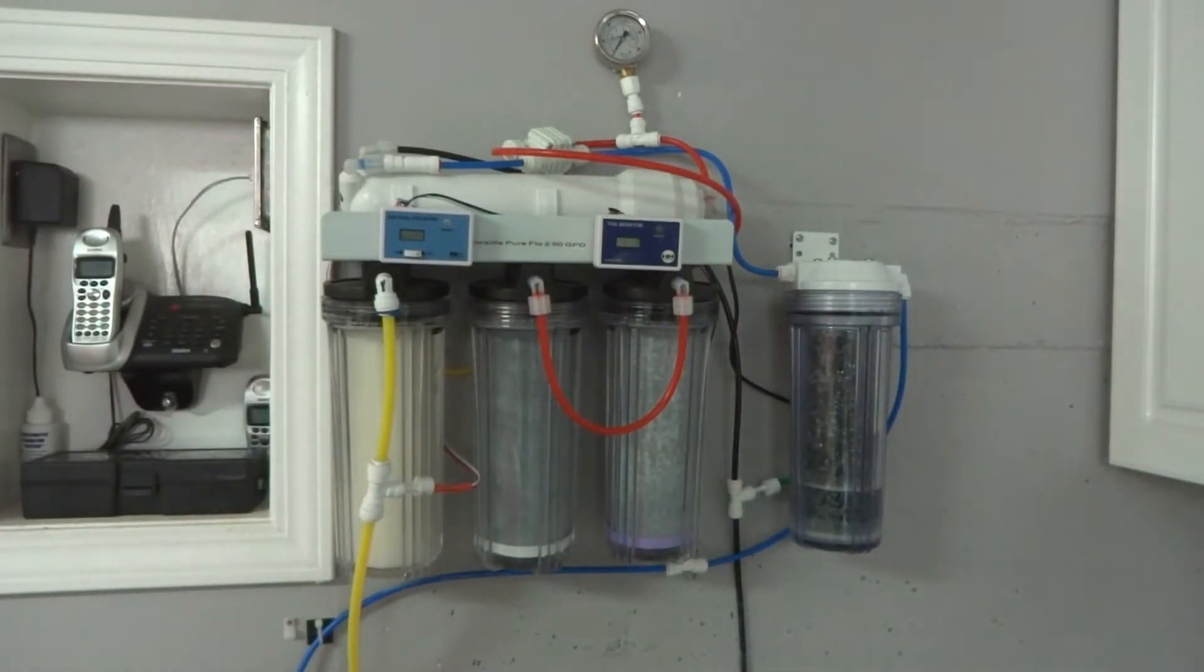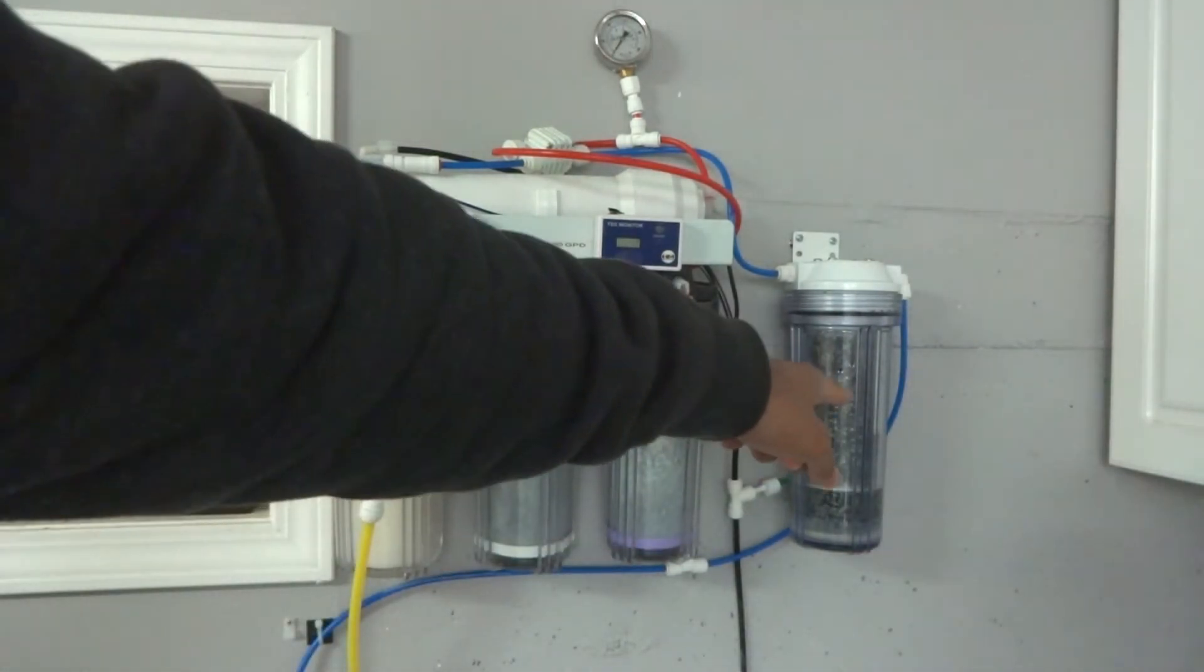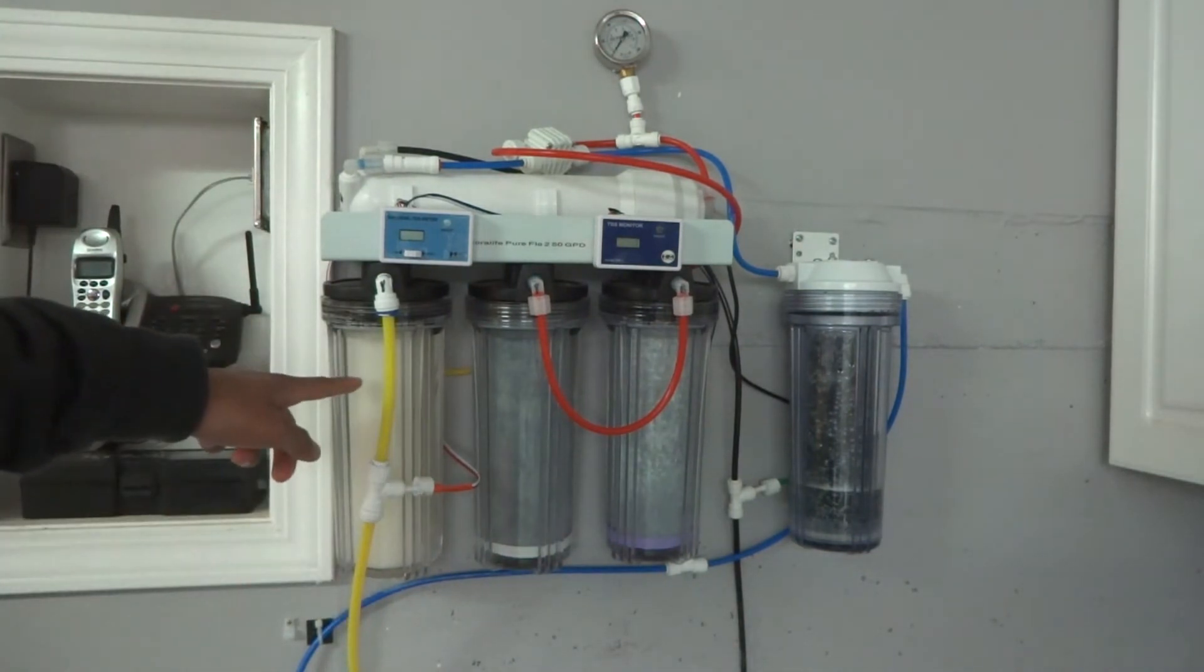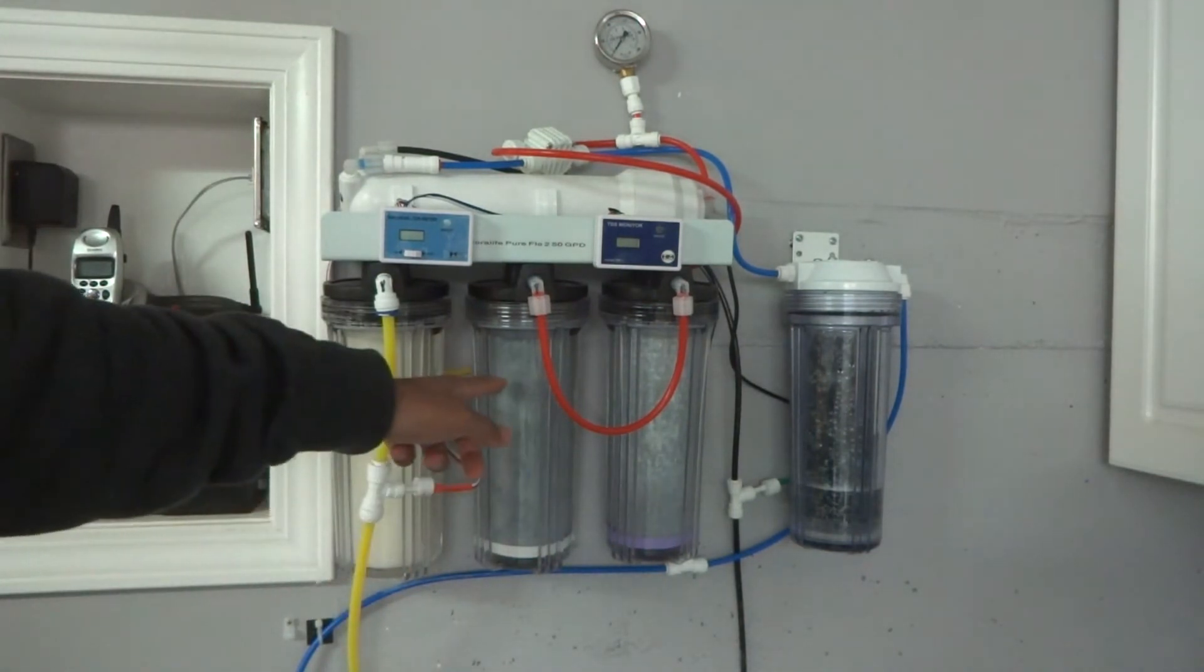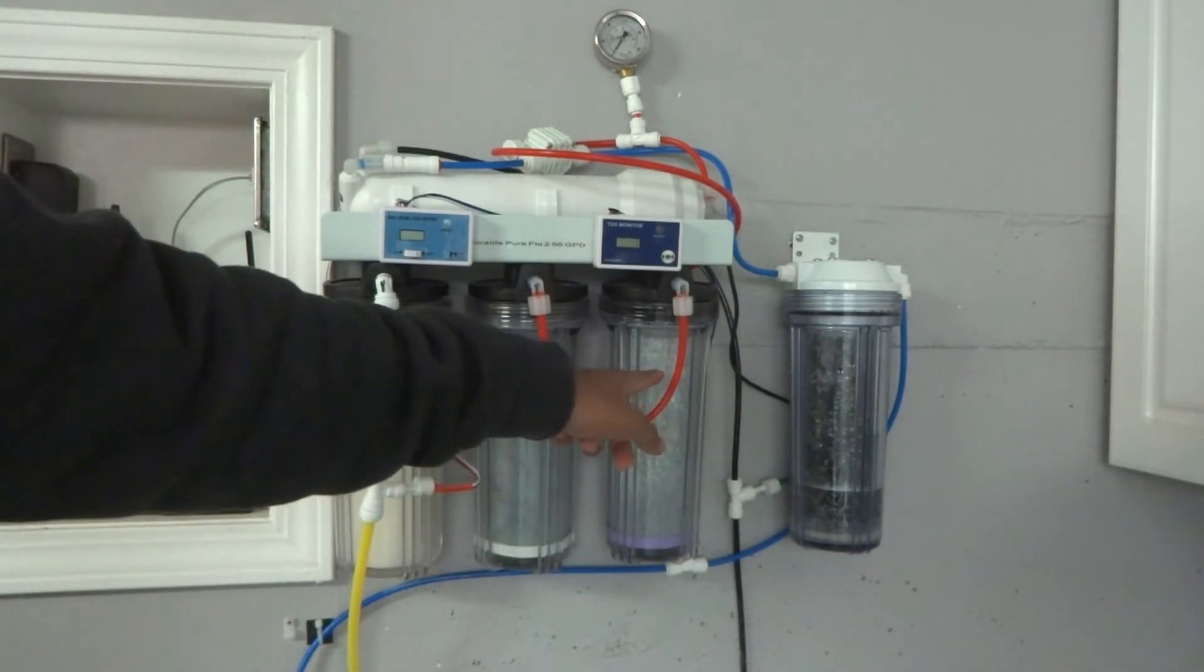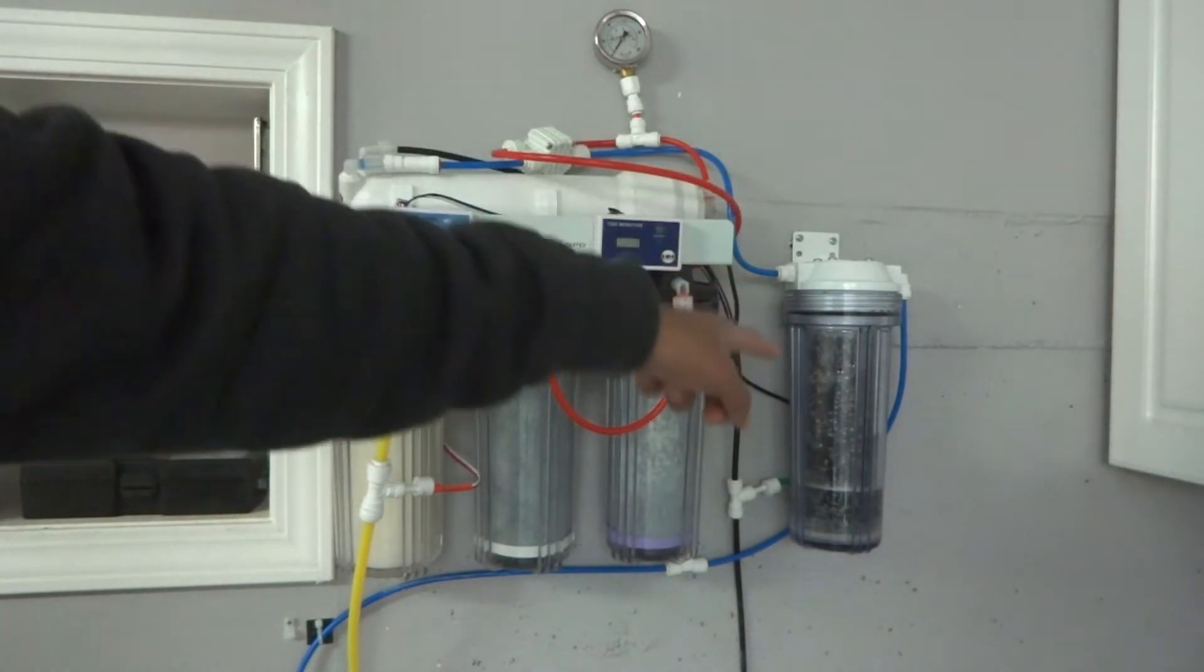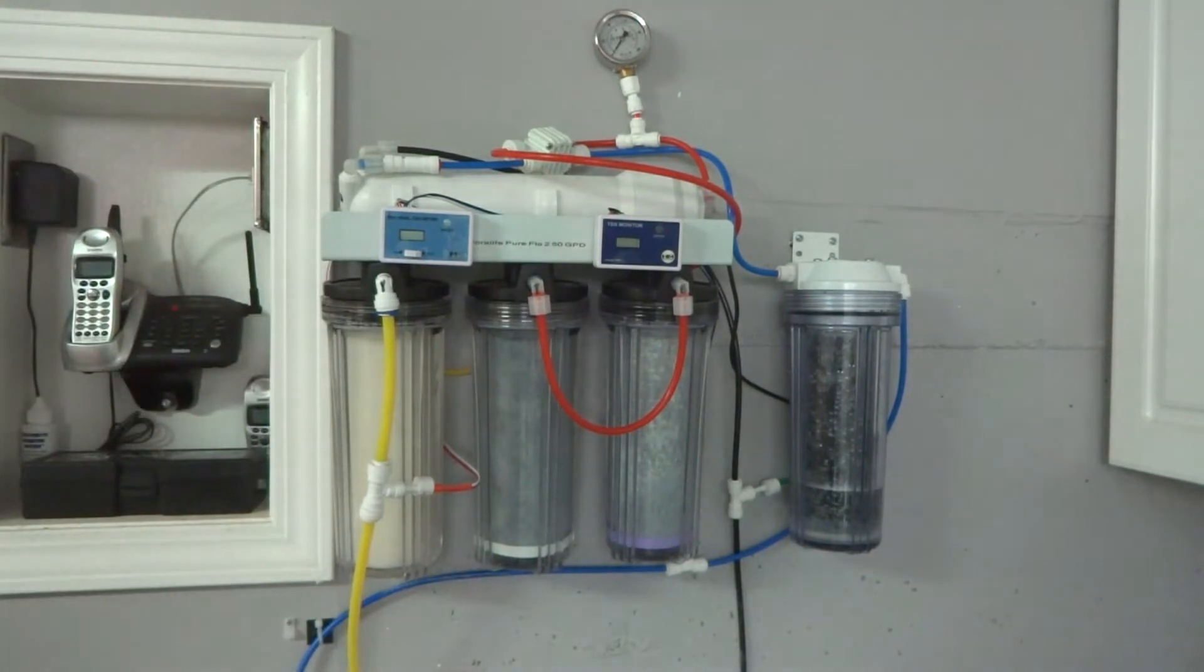Now what I've done, I've changed it out because I have my standalone DI resin off to the side there. So the water is going to come into the sediment stage, go into a carbon stage, go into a second carbon stage, and then from the carbon stage it's going to go to the membrane. From the membrane it will go out to the RODI and out to my product water.